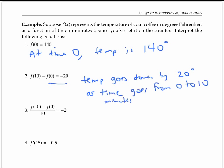Now, what about this quotient here being equal to negative two? Well, this quotient looks a lot like the slope of a secant line, right? So it must be an average rate of change. And in this context, we have the temperature is decreasing by an average of two degrees per minute as x changes from zero to 10 minutes.